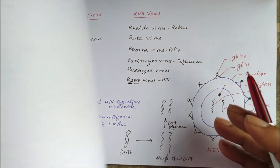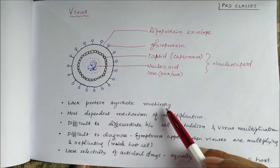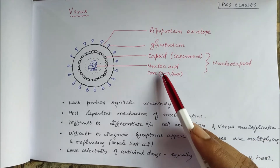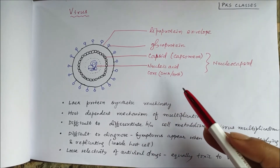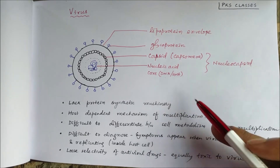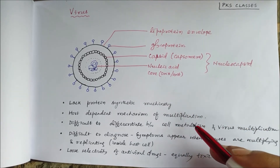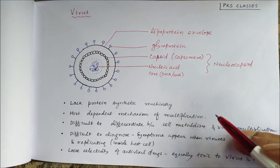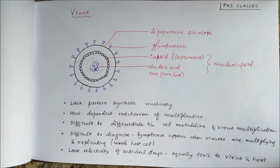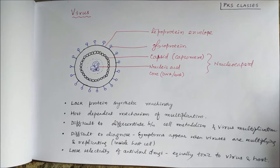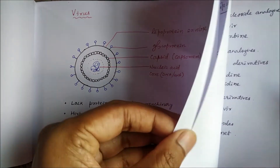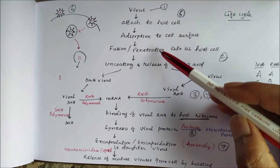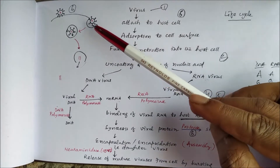The main feature of viruses is that they lack protein synthetic machinery — they depend on the host cell ribosome. They have only the nucleic acid core, produce messenger RNA, which binds to the host cell ribosome and synthesizes the proteins required by the virus. In the viral life cycle, the virus first attaches to and adsorbs onto the host cell surface, then penetrates it.